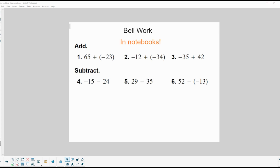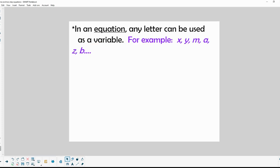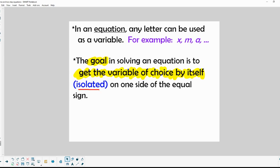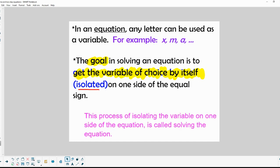Okay, so let's get into what we're talking about. In an equation any letter can be used as a variable. For example x, y, m, a, z, b—any letter really can be used as a placeholder for a number. The goal in solving an equation is to get the variable of choice by itself isolated on one side of the equation or equal sign. This process of isolating the variable is called solving the equation. That's kind of funny, huh?